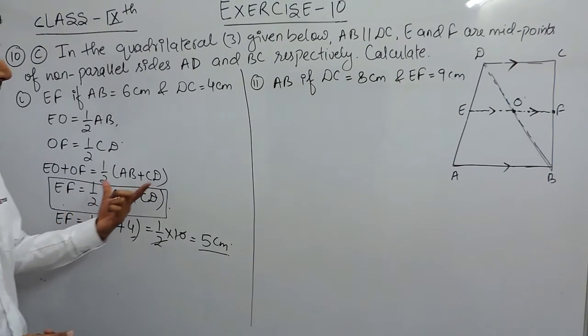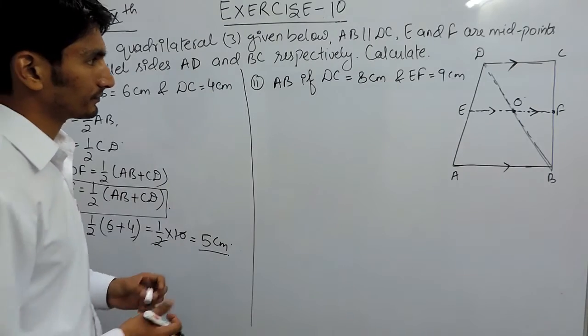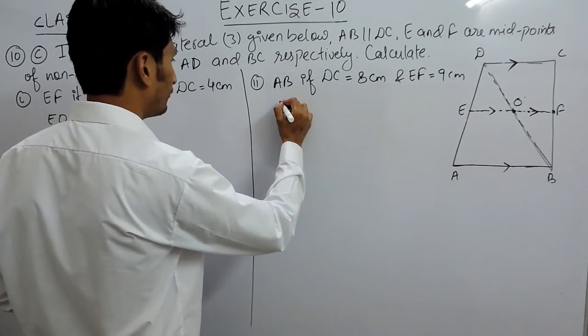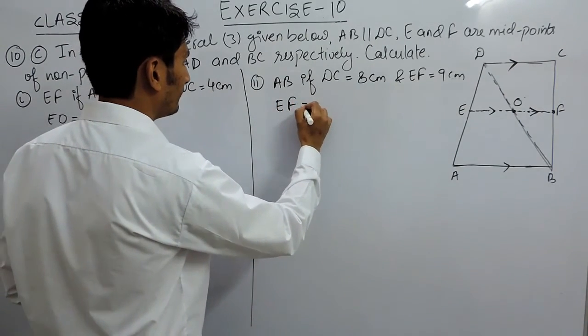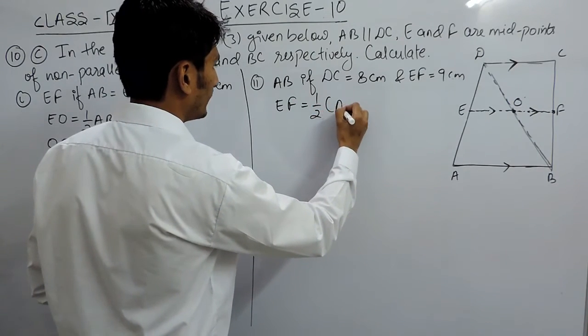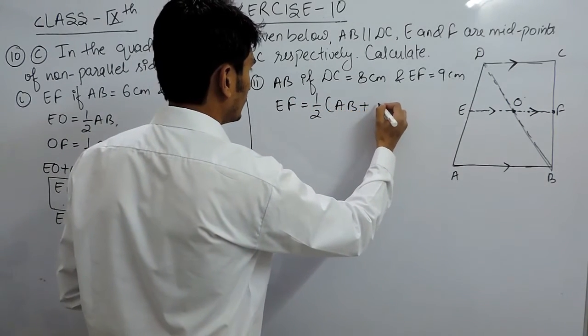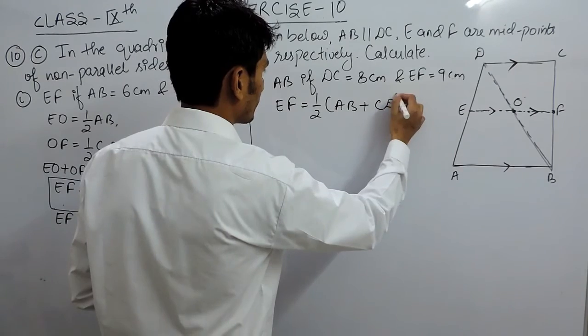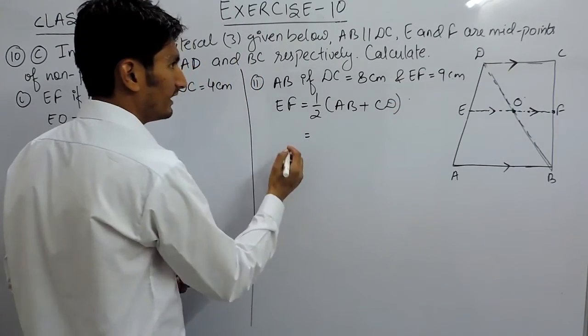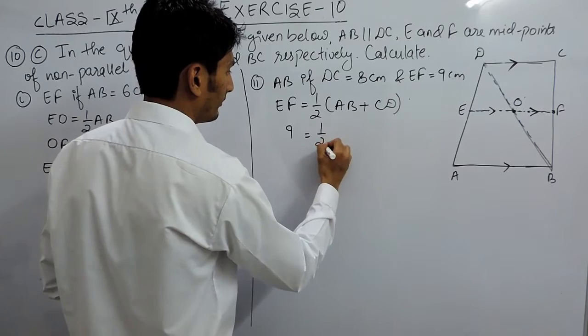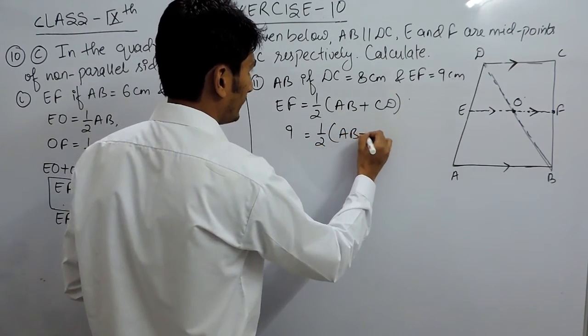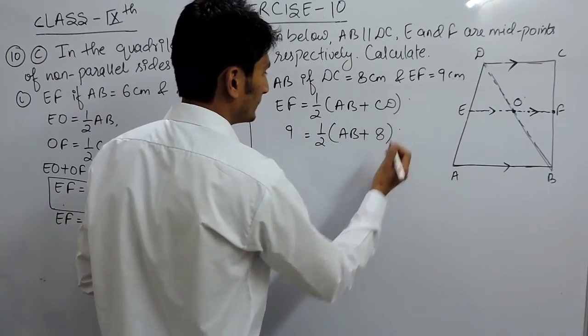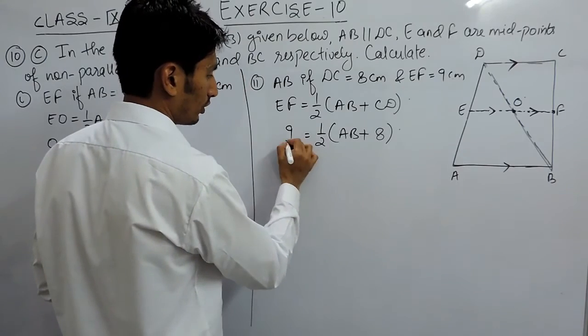The same formula can be applied in this second part. Again, the formula will be EF equals half of AB plus CD. Here EF is given as 9 centimeters, you have to find AB, and CD is given to you as 8 centimeters.